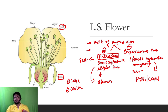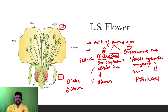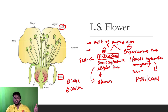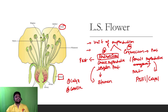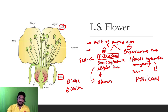The petals basically do the attraction. They attract honeybees or insects, and even human beings are attracted. This is how they help in the process of pollination.